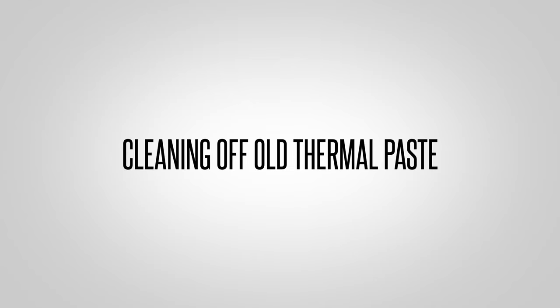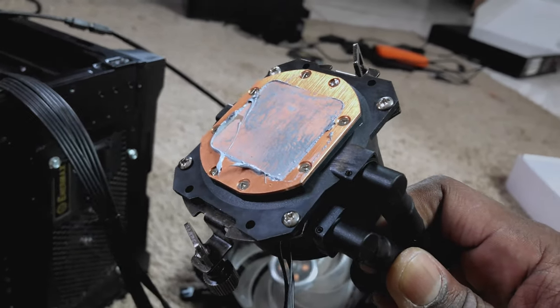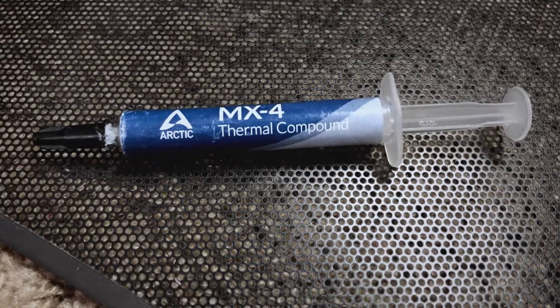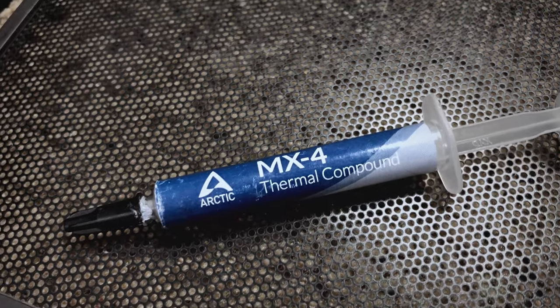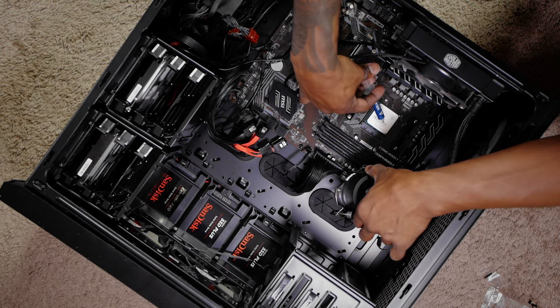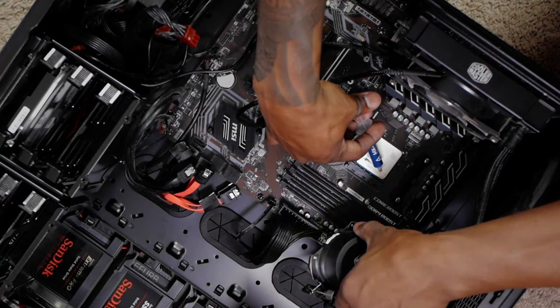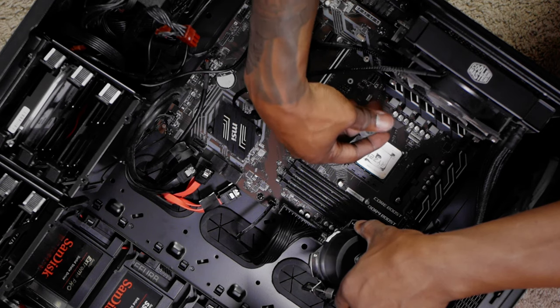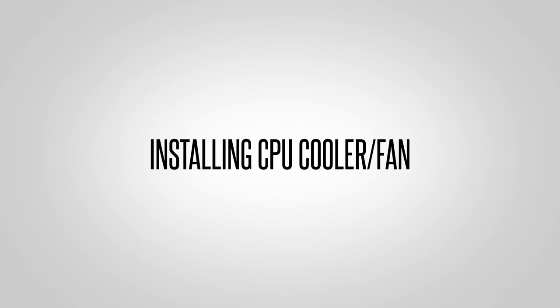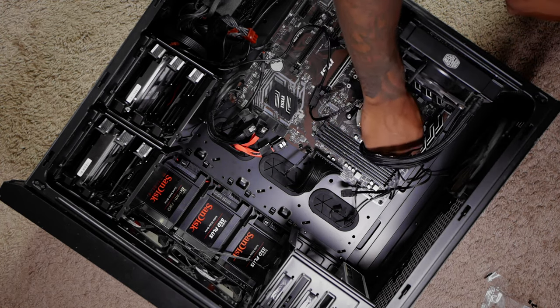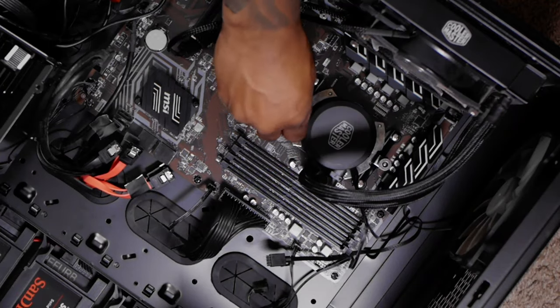Next, clean off all the old thermal paste from the CPU heat sink using alcohol swabs — it'll come off really easily. This is the thermal paste I recommend: apply small little portions to the center and a little bit on the corners. When you clamp the CPU cooler back down, just that small amount of thermal paste will spread evenly across the entire surface area of the CPU. Once the thermal paste is applied, reinstall the CPU cooler the same way you took it off — two latches on each side with a lever that secures and tightens the clamps onto the CPU socket.